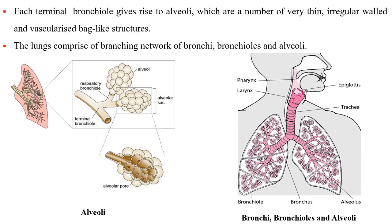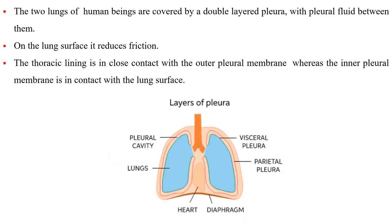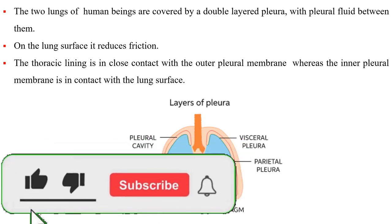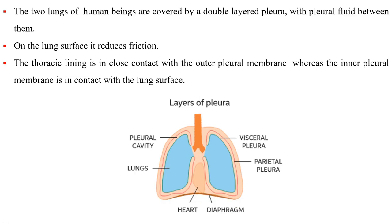Each terminal bronchiole gives rise to alveoli, which are numerous very thin, irregular-walled and vascularized bag-like structures. The lungs comprise a branching network of bronchi, bronchioles, and alveoli. The two lungs of human beings are covered by a double membrane called the pleura, with pleural fluid between them, which reduces friction on the lung surface. The thoracic lining is in close contact with the outer pleural membrane, whereas the inner pleural membrane is in contact with the lung surface.